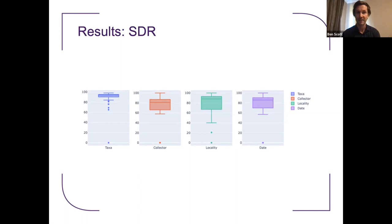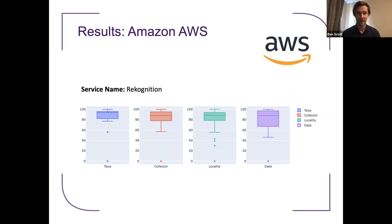Let's have a look at our first cloud offering: Amazon. They offer a service called Rekognition which reads both printed text and handwriting from images. It's the trickiest service to use — you need to submit the image in one call and retrieve the JSON results in another by polling until processed. But it's pretty speedy. Submitting the same test images, we get pretty similar results to the SDR, though worse performance on taxonomic names.